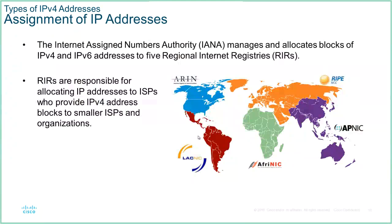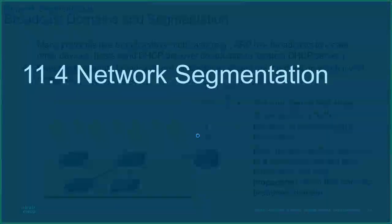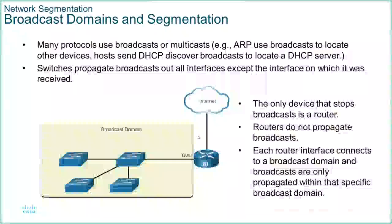Internet addresses are assigned by IANA and the regional internet registries that look after addressing. But for most of us, our service provider gives us our address range. When we're looking at an enterprise that has multiple live addresses, they're given to us by the service provider when we subscribe to a service.